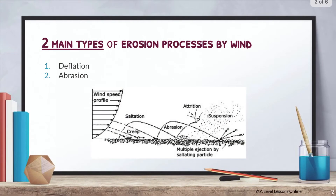There are two main types of erosion processes by wind: firstly, deflation, and the next one is abrasion. As you can see from this diagram, there is abrasion happening here. The diagram also shows wind transportation processes — saltation, creep, attrition, and suspension. There's another video I did on aeolian processes covering aeolian deposition and transportation — I'll leave a link in the top right-hand corner of the screen.